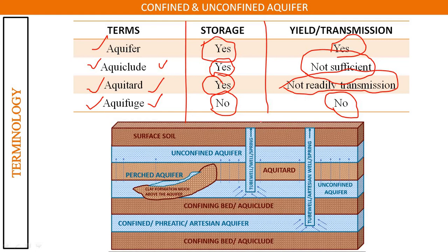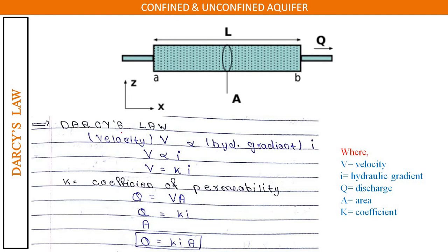Next we will see Darcy's law. Here: v is velocity, i is hydraulic gradient, q is discharge, a is area, and k is the coefficient of permeability. Darcy's law states that velocity is directly proportional to the hydraulic gradient: v proportional to i. Removing the proportionality, v equals k times i.